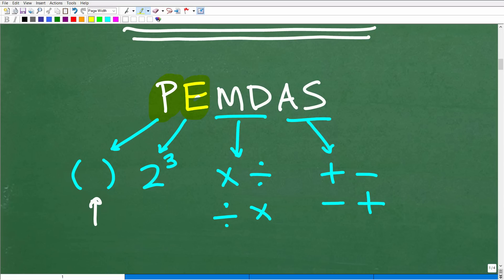All right, so that's P. The E stands for exponents, but you can kind of interpret that as powers. So something like 2 to the 3rd power. So if you see anything with powers and exponents, you're going to want to take care of those things next.